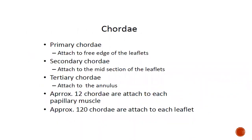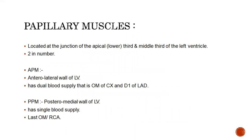The chordae tendineae include primary chordae which attach to the tip of the leaflet, secondary chordae which attach to the mid-section of the leaflet, and tertiary chordae which attach to the annulus. Different defects on different chordae can lead to MR of different etiology. There are approximately 12 chordae per papillary muscle and approximately 120 chordae attached to each leaflet. There are two papillary muscles: the anterior papillary muscle and the posterior papillary muscle.